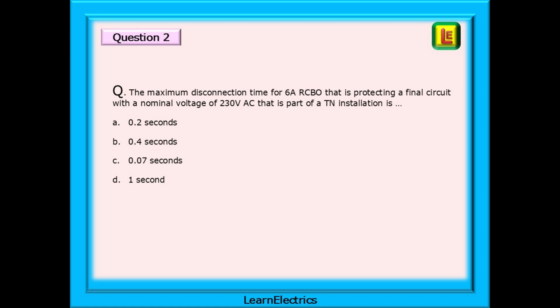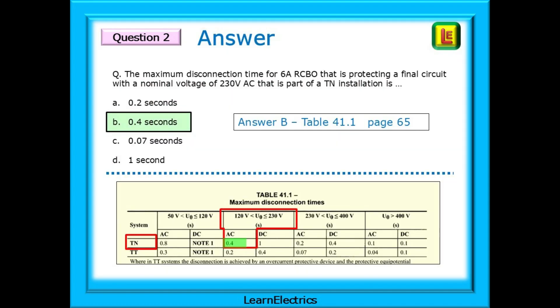Question 2: The maximum disconnection time for a 6 amp RCBO that is protecting a final circuit with a nominal voltage of 230 volts AC that is part of a TN installation is?